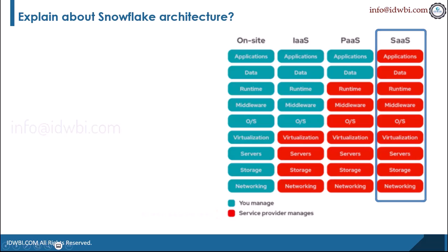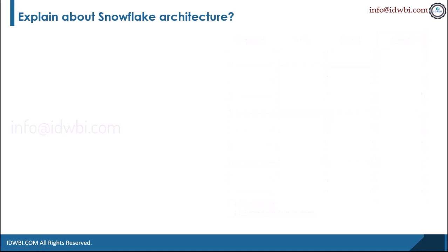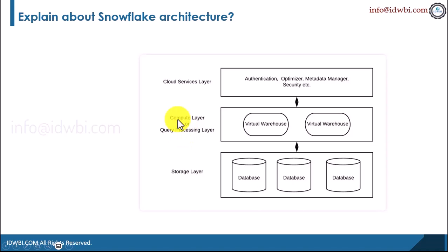From the architecture point of view, there are three main components that make up the Snowflake data warehouse. As you can see, there is a storage layer to start with, a compute or query processing layer, and then the cloud services layer.